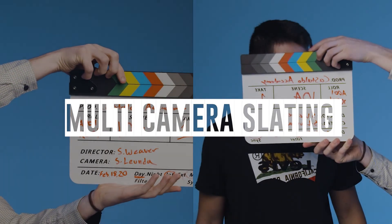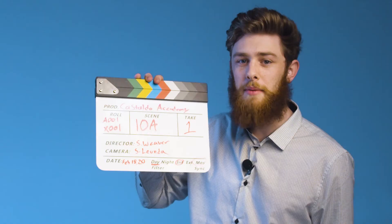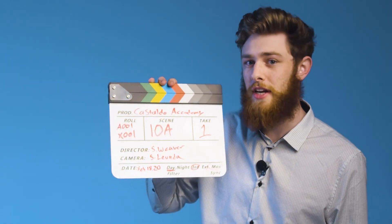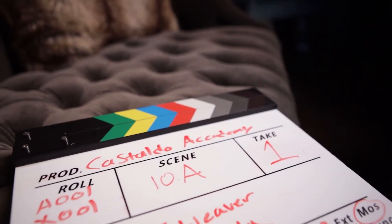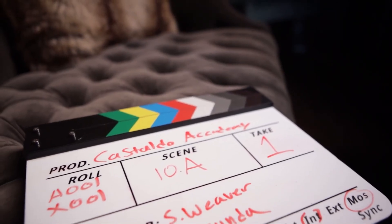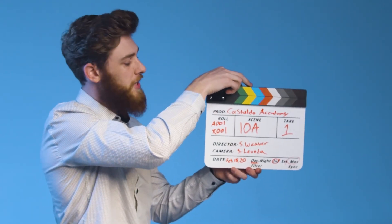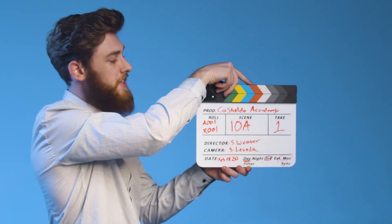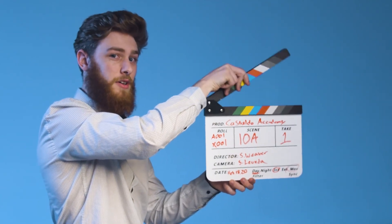In a situation where there's multiple cameras, you're going to want to start by slating the first camera, or camera A. So get into position, make sure the slate is in frame, then just mark the first camera: 'Scene 10 alpha take one.' Then, instead of saying scene and take for the other cameras, you're just going to want to say 'camera B mark' or 'camera C mark.'